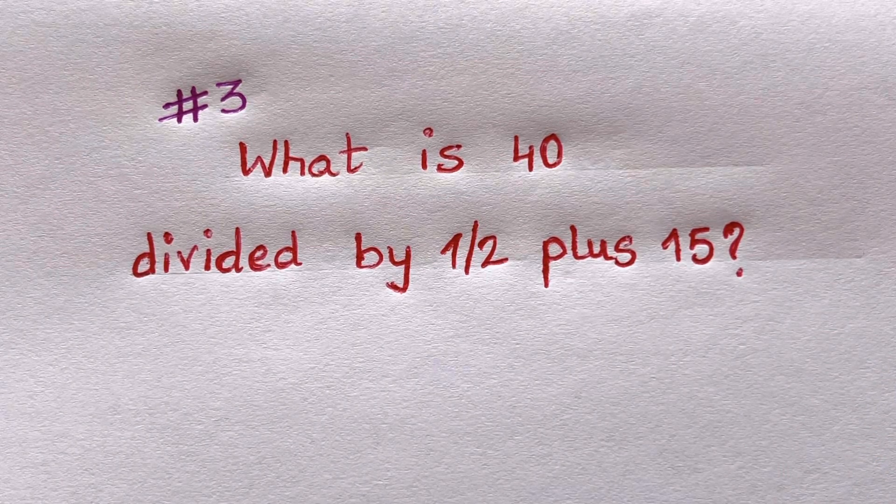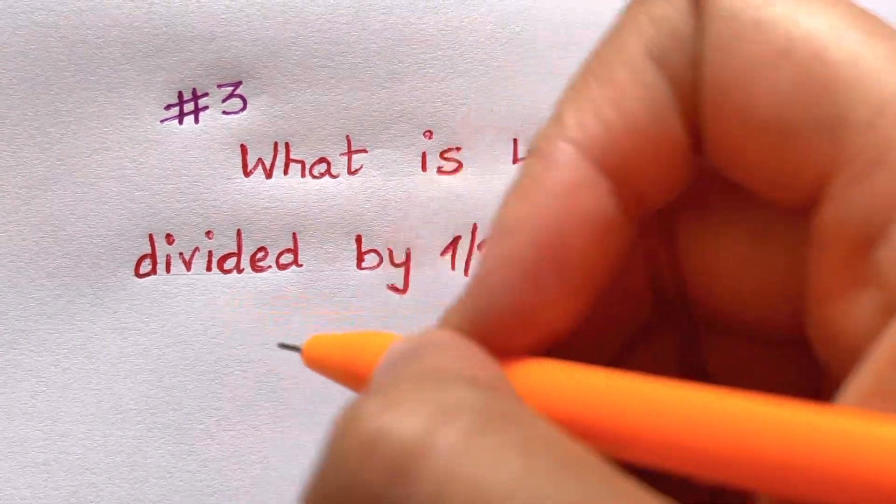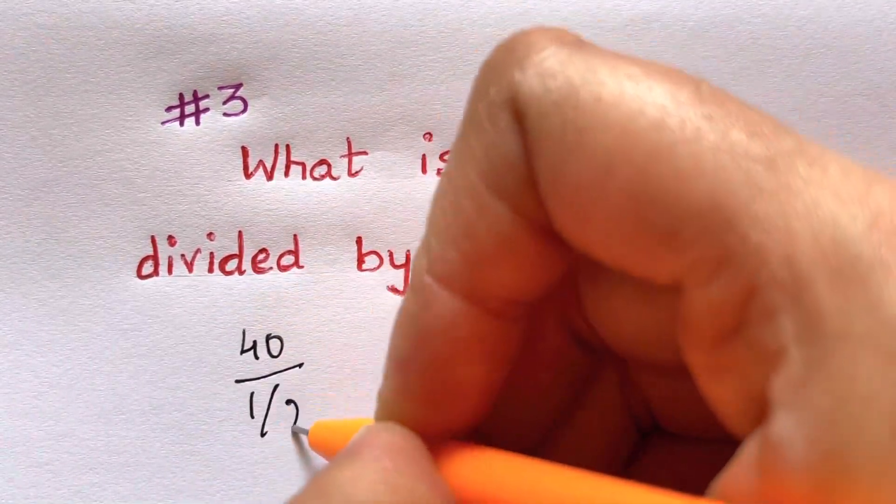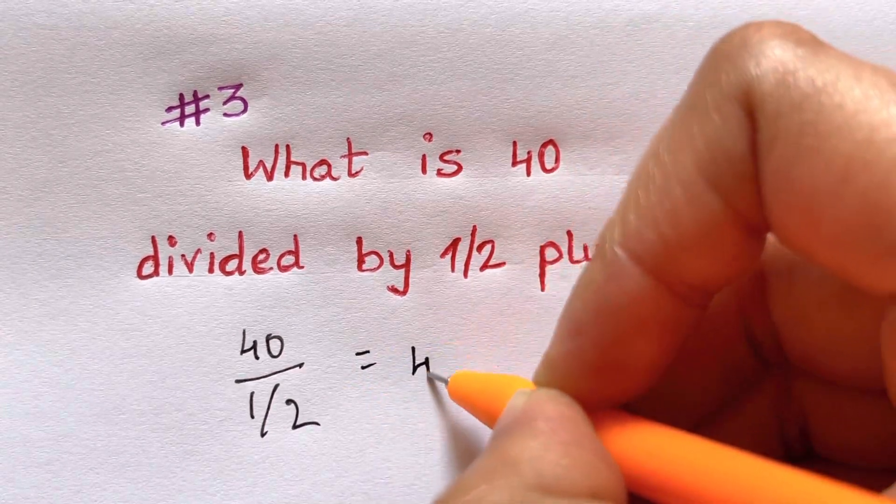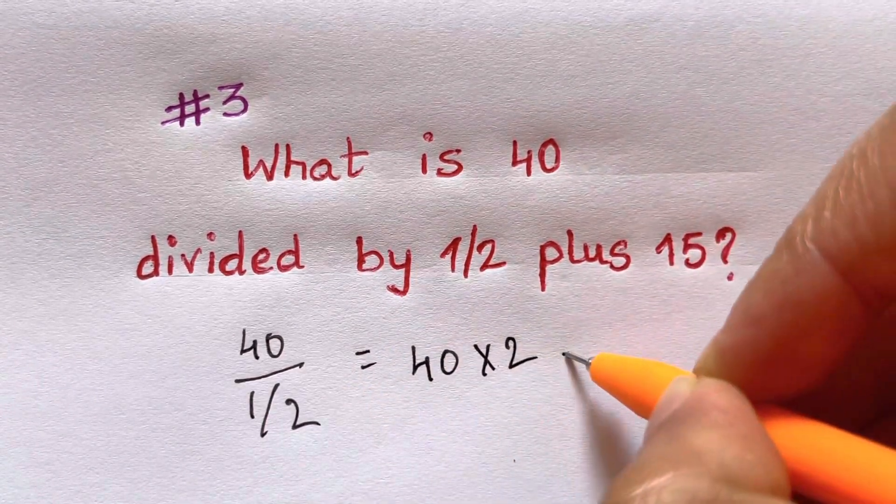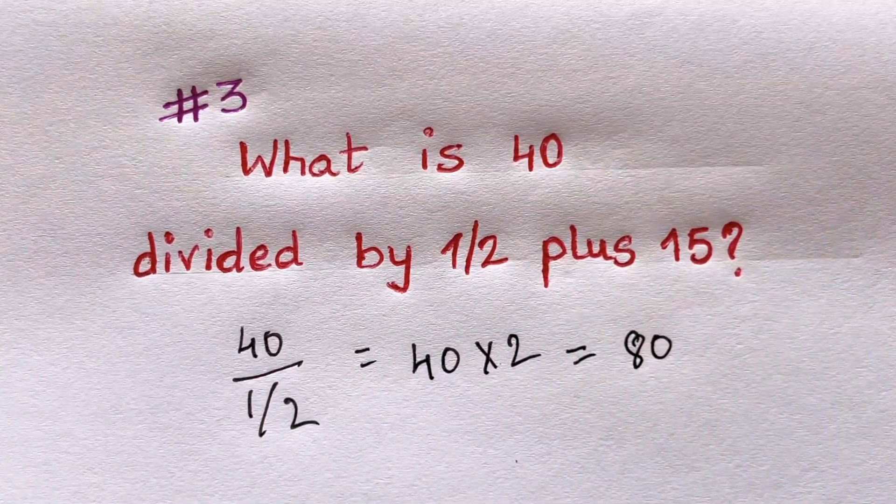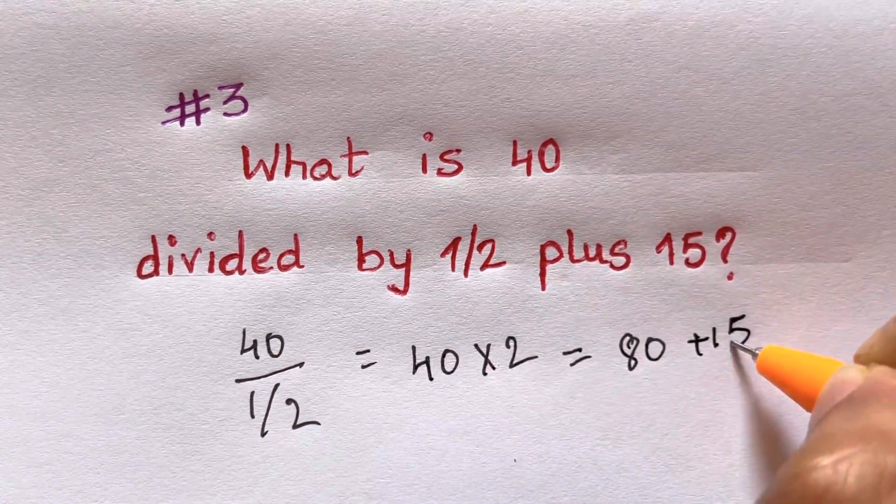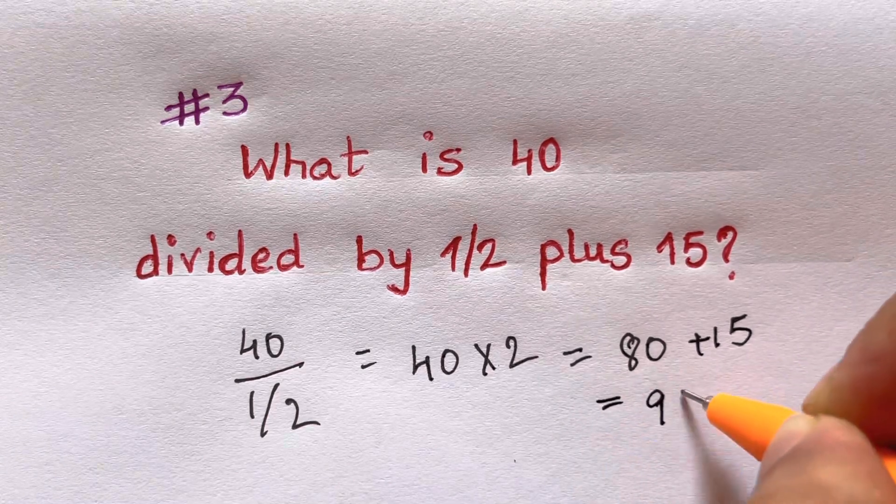So the answer is: 40 divided by half is just 40 times 2, which equals 80. And 80 plus 15 will give you 95.